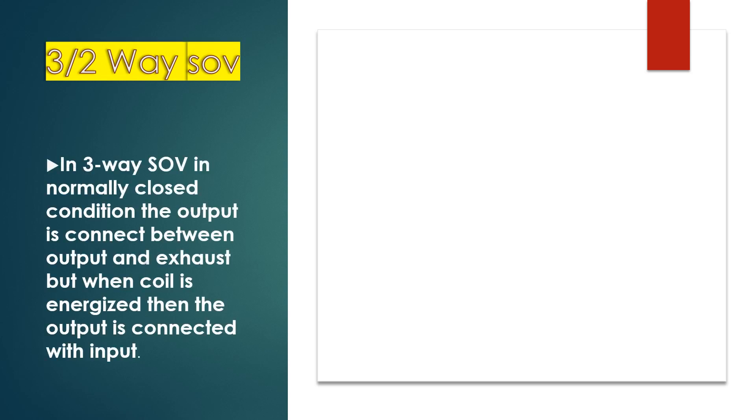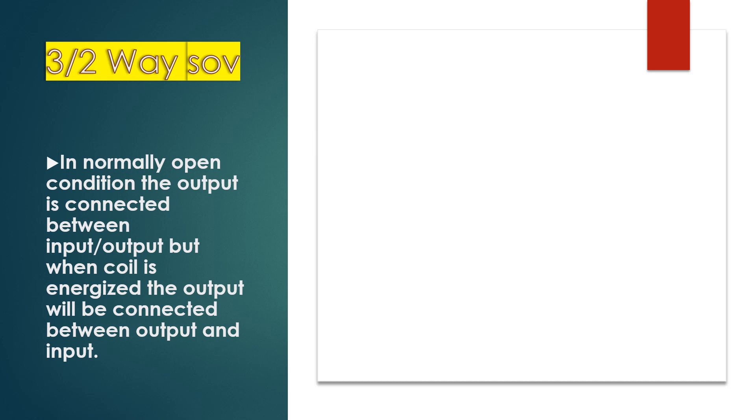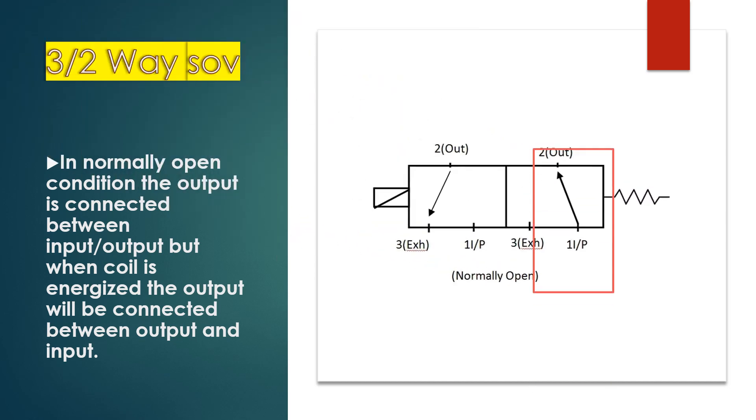Next is 3 by 2 solenoid valve. In 3-way solenoid valve, in normally closed condition, the output is connected between output and exhaust. But when the coil is energized, then the output is connected with input. In normally open condition, the output is connected between input and output. But when the coil is energized, the output will be connected between output and input.